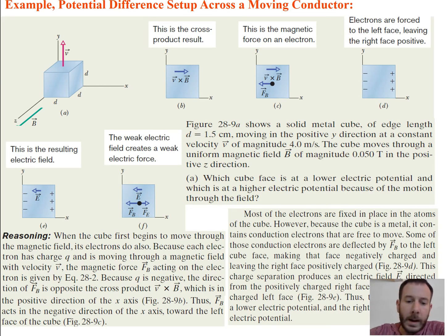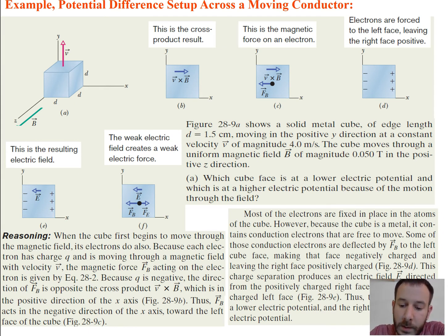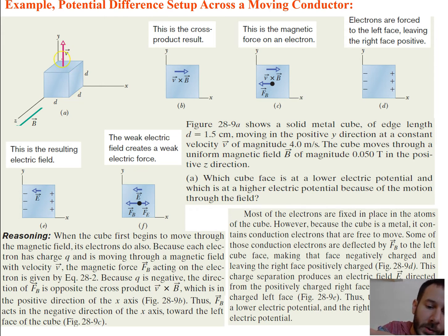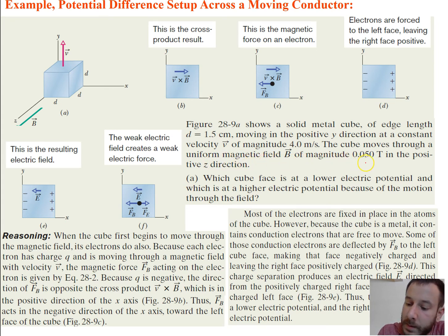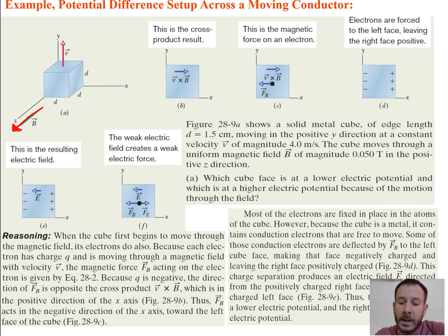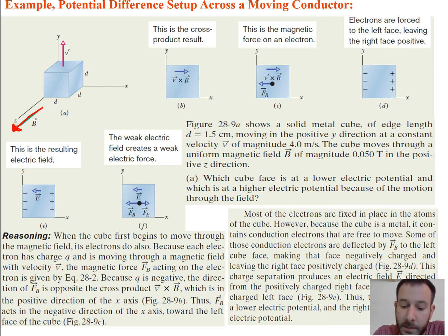Let's do an example. In the figure, a solid metal cube of edge length D = 1.5 centimeters is moving in the positive y direction at a constant velocity of magnitude 4 meters per second. We have a magnetic field that's uniform with a magnitude of 0.05 tesla in the positive z direction. It asks us which cube face is at a lower electric potential and which is at a higher electric potential because of the motion through this field.